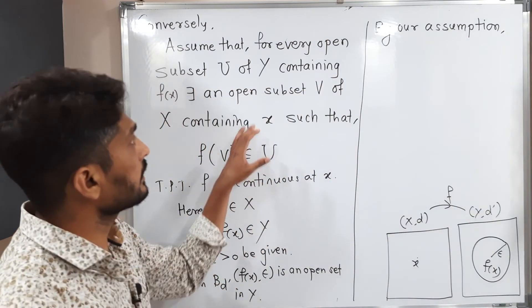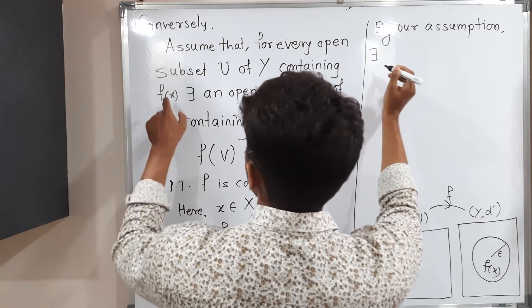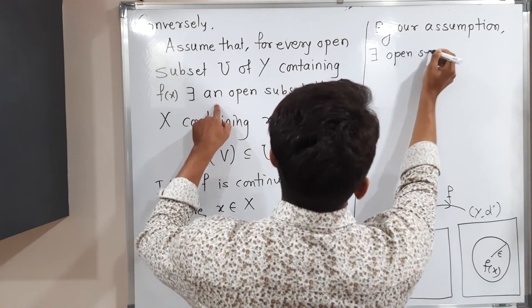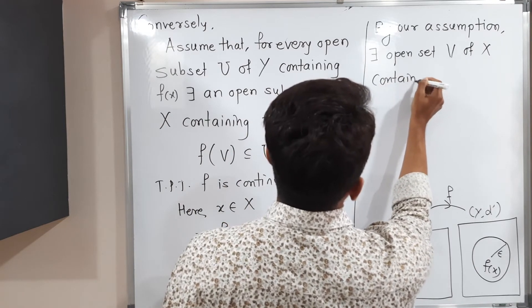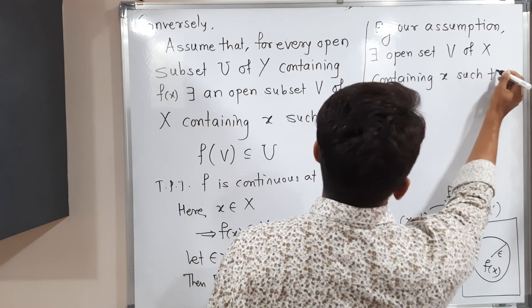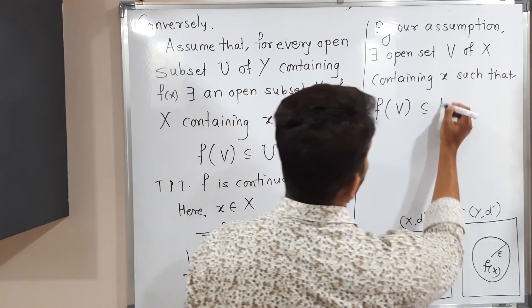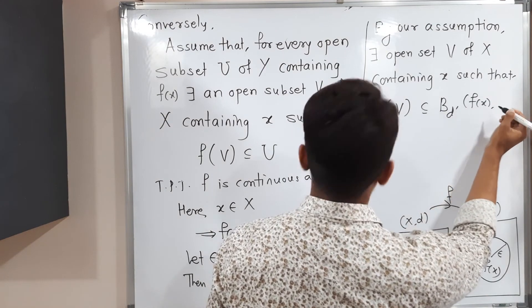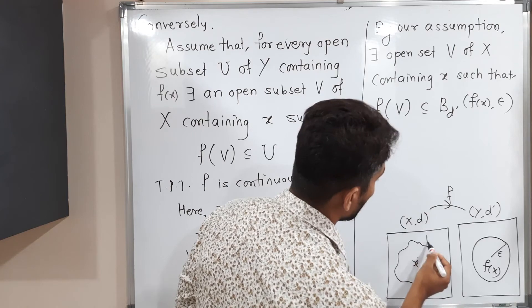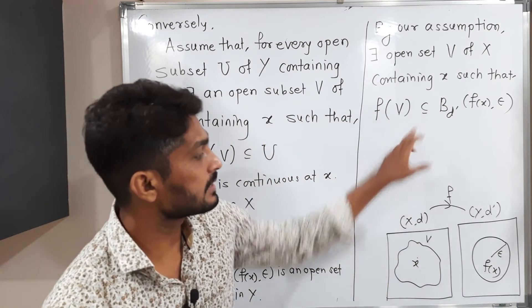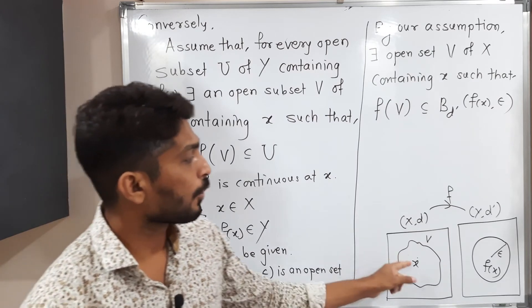By our assumption, there exists an open set V in X containing x such that f(V) ⊆ B(d', f(x), epsilon). That means if we take any element in V and apply f, its image will be inside this ball. Now we use the information that x belongs to V and V is open.